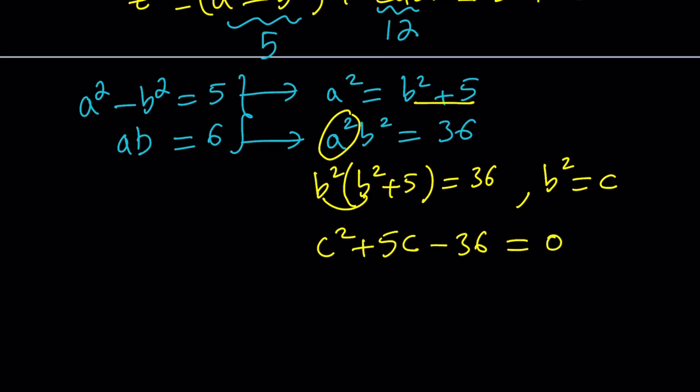c times c is c squared plus 5c equals 36. Let's subtract 36 and turn this into a quadratic equation in c. Hopefully you see what I see. So how do you solve this equation? Easy. Quadratic formula or looking at the factors.